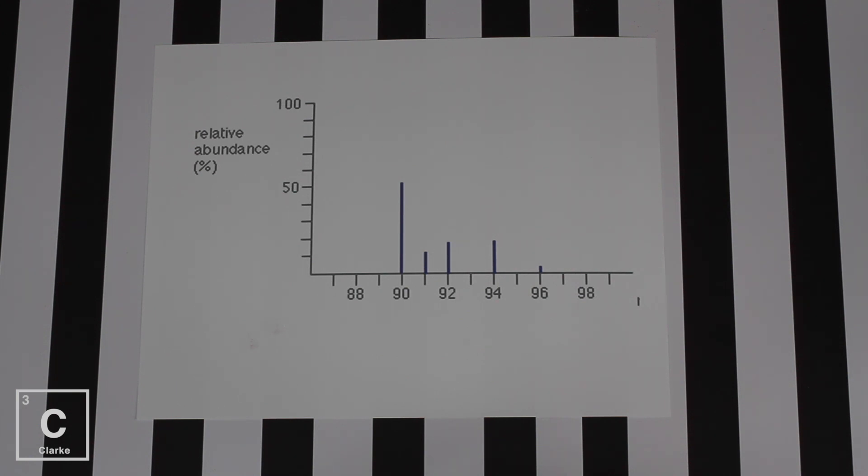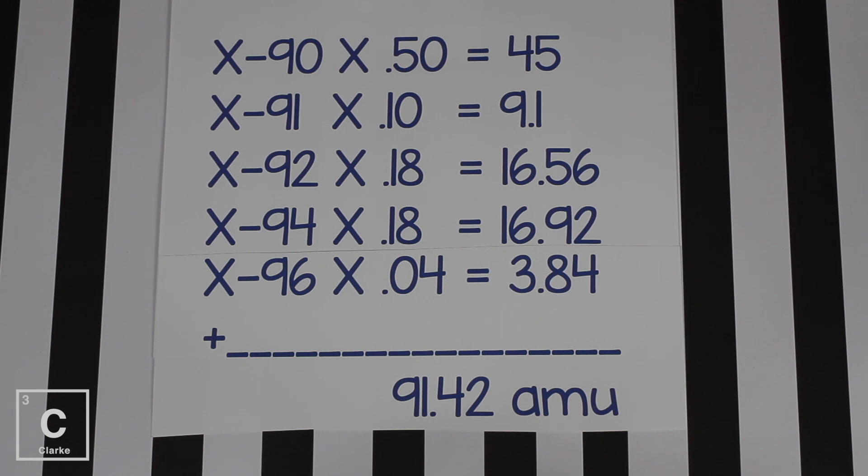Let's set that up like the last problem. Now since this is an unknown element, I use the symbol x. You know, just like in algebra, x is our unknown. So when our isotope is x-90, we're going to times that by that 50% and we get 45. When the mass number is 91, that's 10%, that's 9.1. 92 times 18% is 16.56. Mass number 94 times 18%, that's 16.92. Mass number is 96, that's times 4%, 3.84.